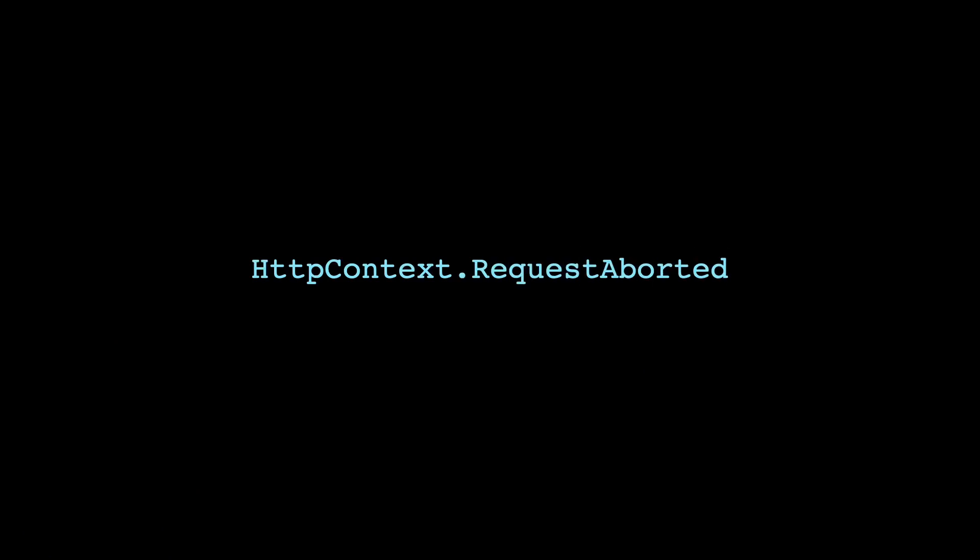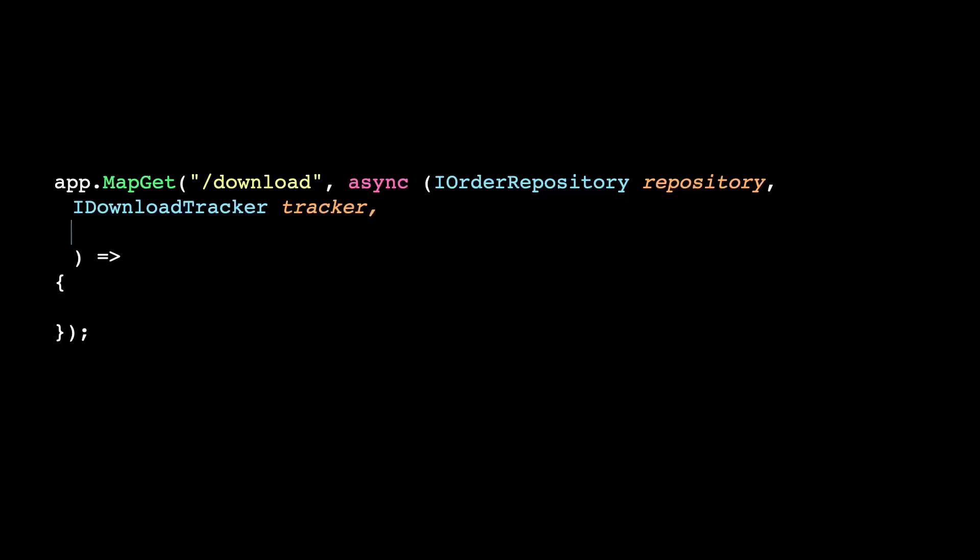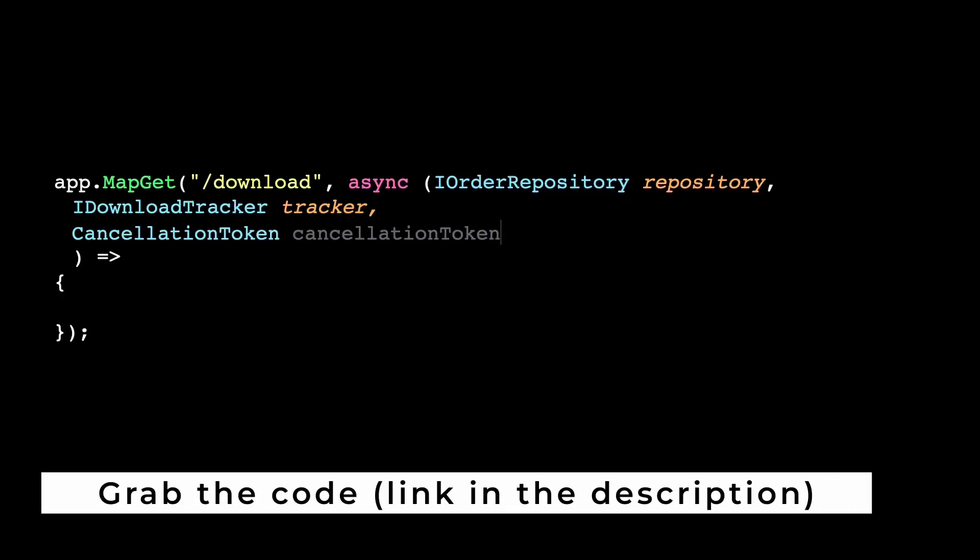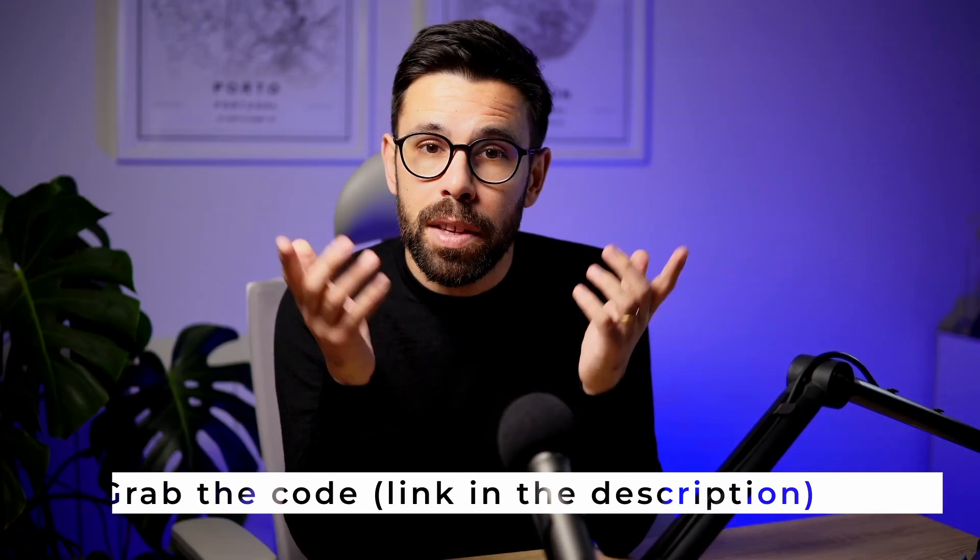And how does that happen in ASP.NET? That information will come through the HTTP context — we have the request-aborted property there. However, I don't like that. Instead, I prefer to add an extra argument to my endpoint. If that argument is of the type cancellation token, the API infrastructure will automatically bind that type to the request-aborted from the HTTP context. And by the way, this is not exclusive to minimal APIs — you could do exactly the same in an MVC action.